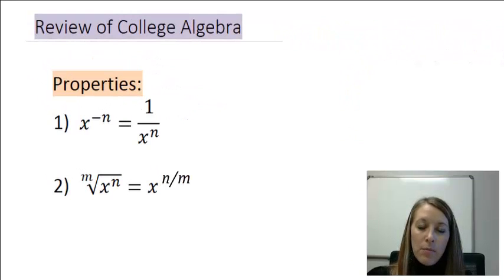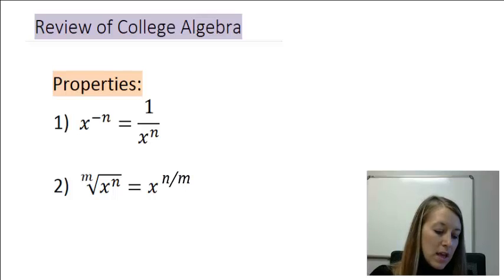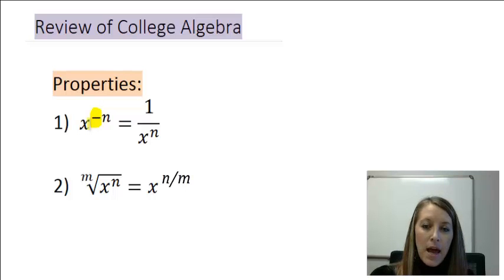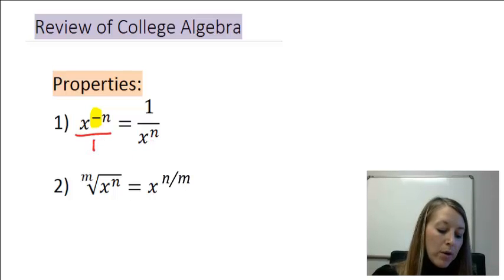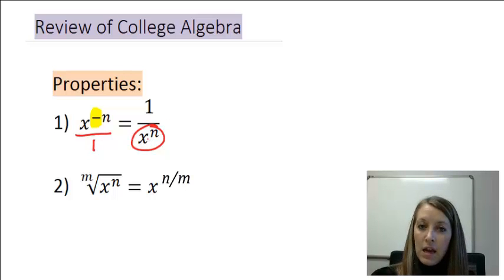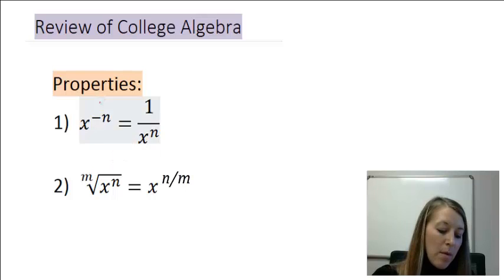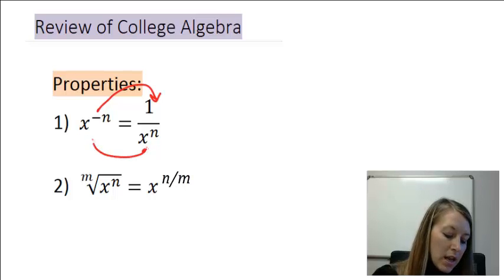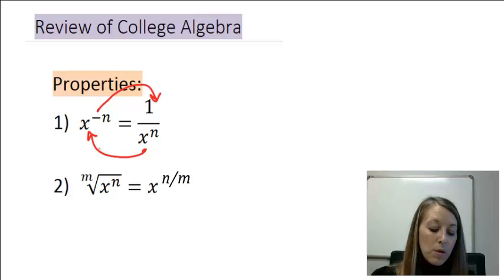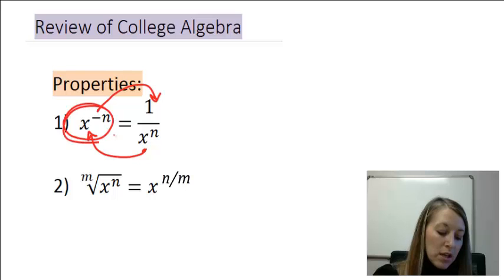We need to review some properties from College Algebra. The first property is negative exponents — I call those a 'bad attitude' in my class. If they have a bad attitude, I don't want them on the same floor. So we move them to the opposite floor: if something is in the numerator with a negative exponent, we move it to the denominator, and the negative exponent goes away. In this class, we'll most likely go from a fraction and rewrite it as a negative exponent, because we want things as x to some power.